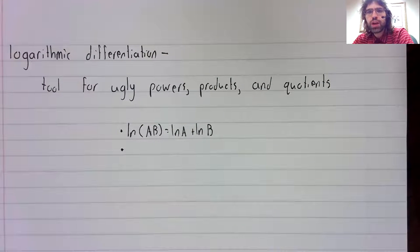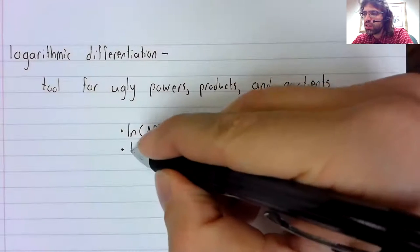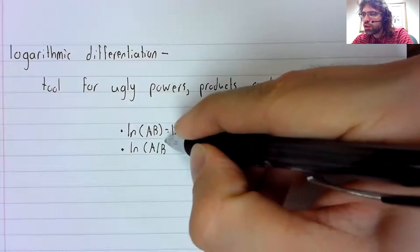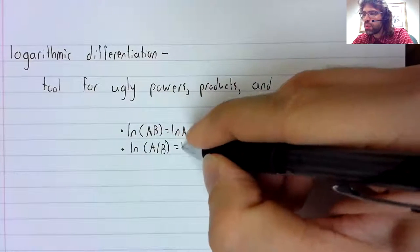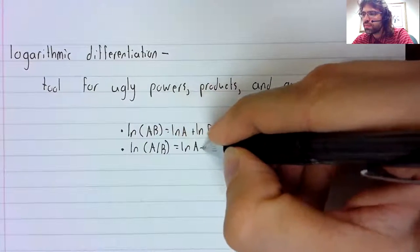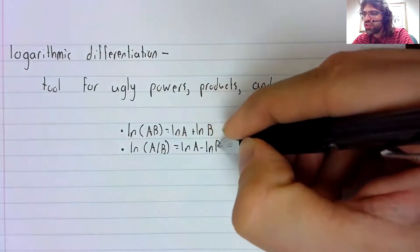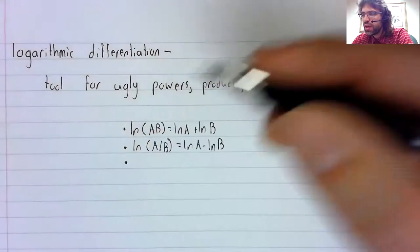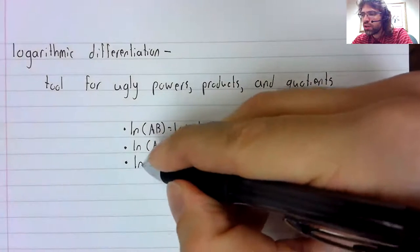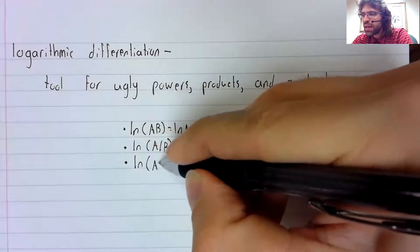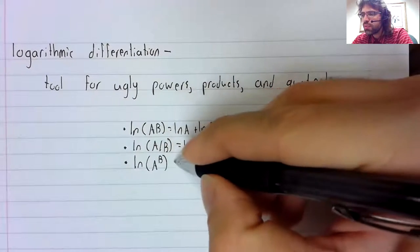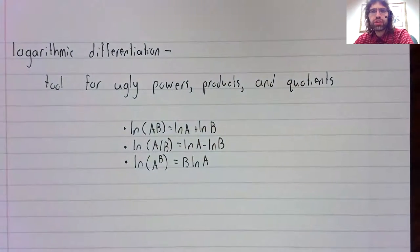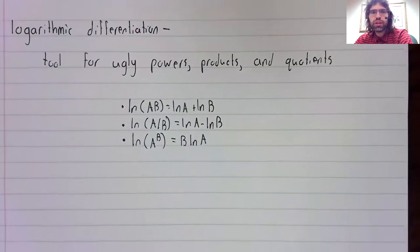The logarithm of a product is the sum of the logarithms, the logarithm of a quotient is the difference of the logarithms, and the logarithm of a power brings the power down in front of the logarithm.